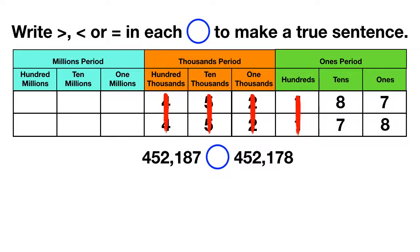Now we get to the tens place. The first number has an eight and the second number has a seven. Finally, we found a place value that'll let us compare these numbers. We can see that eight is bigger than seven, so the first number must be bigger than the second number.